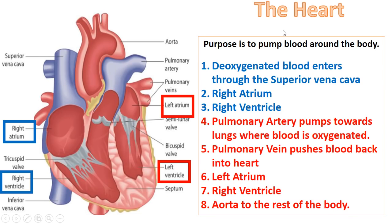Another important part of the cardiovascular system you need to know about is the heart. I'm going to go through this in a really simple, basic way. I've highlighted four key areas of the heart: the right atrium, left atrium, and the right and left ventricles. Atriums are on the top of the heart and ventricles are on the bottom. Then you have arteries and veins to help blood flow in and flow out.